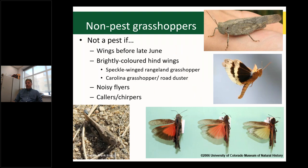That mantra comes with a big asterisk this year because we are seeing really rapid development with the high heat we've had. Grasshoppers are ectotherms — the warmer the better for pest species. We have fifth instar nymphs of two-striped grasshopper in the south central region right now, meaning we're very likely to see adults well before late June. We're getting into mid-June, so winged adults in some areas.